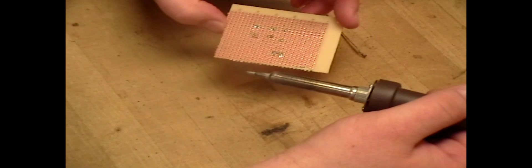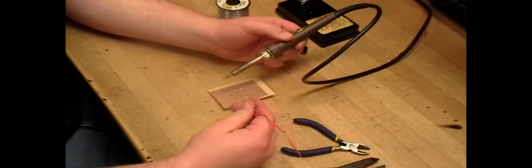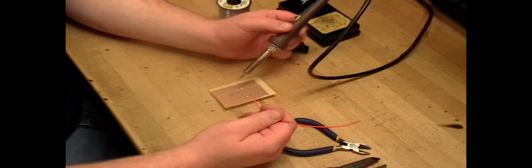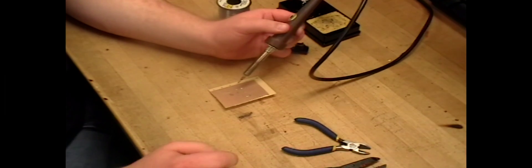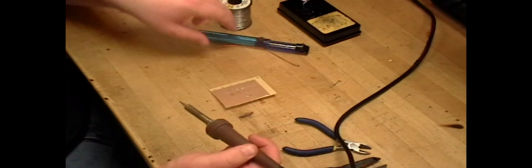We've desoldered that with two different methods. The other method is the stranded wire method, which involves taking a spare piece of stranded wire, heating up the solder, and flicking it. But I don't recommend that because you can cause shorts and all kinds of problems. So we'll just stick with the vacuum and the ribbon. That's it.